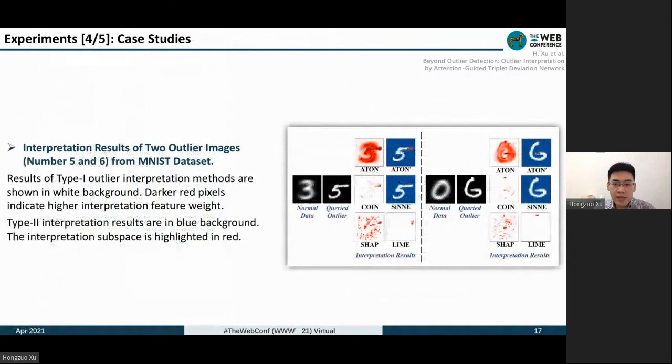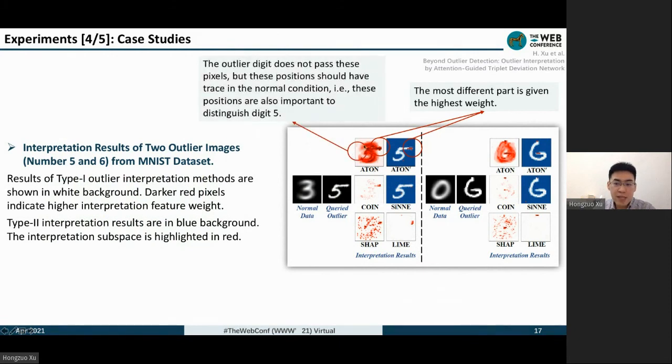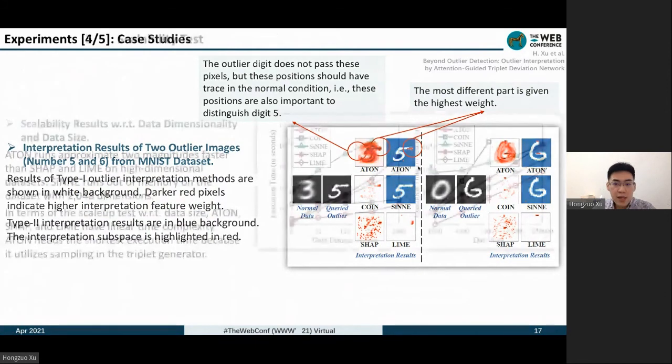This is the comparison between Type 2 methods, and ATON can also significantly outperform these competitors. We use the MNIST dataset as a case study. We generate two imbalanced datasets by choosing relatively similar numbers as normal data and outlier data. We can see that the most different parts are given the highest weight. Besides, the outlier digit does not have these pixels, but these positions should have strokes in the normal condition, and these positions are also important to distinguish the digit.